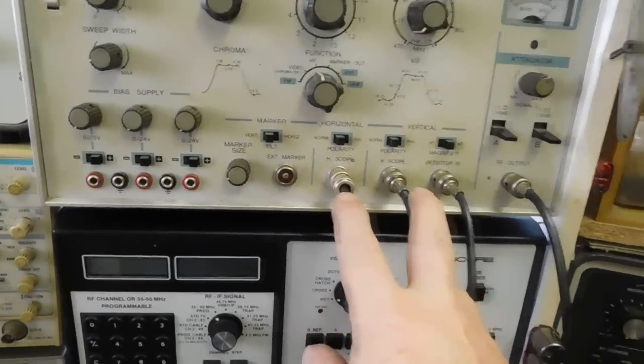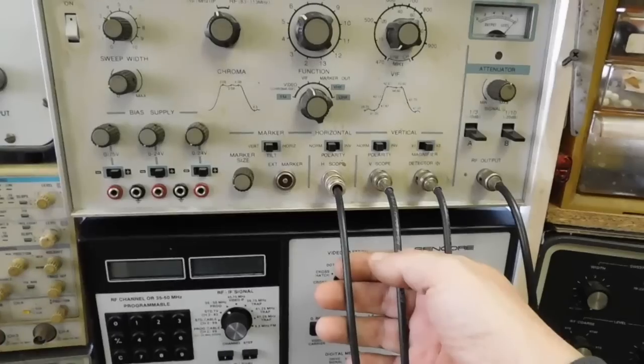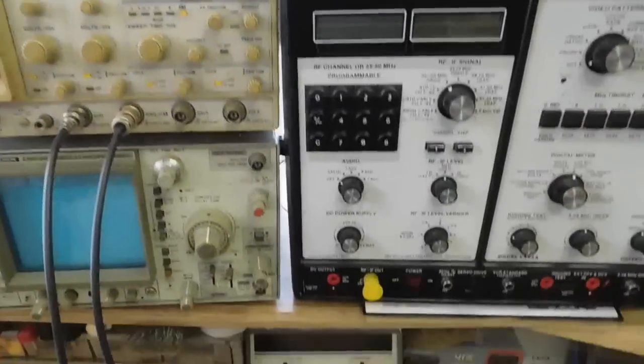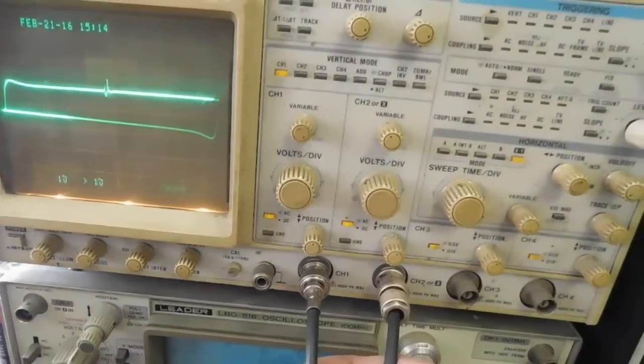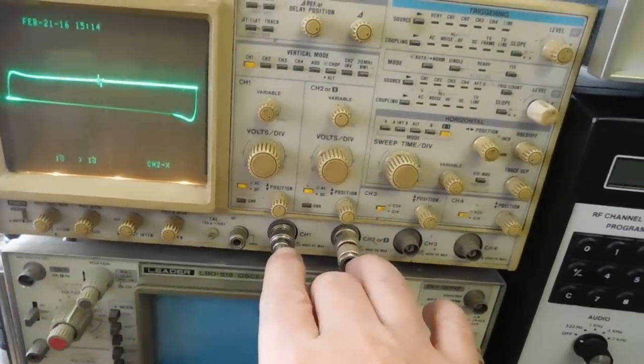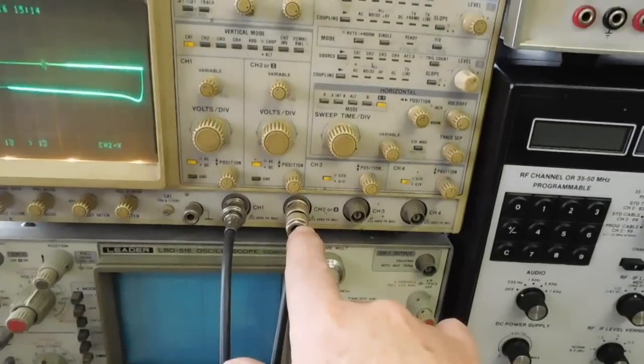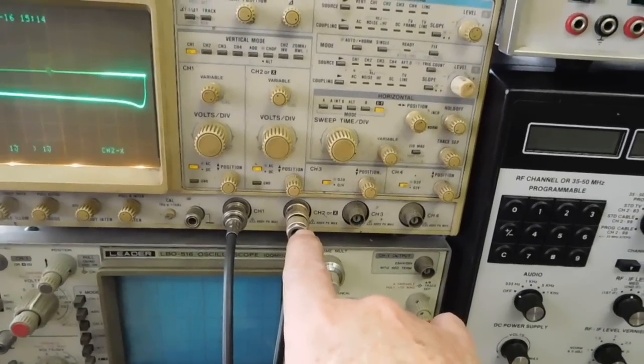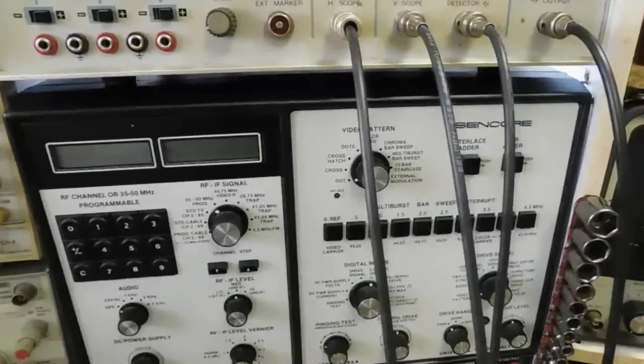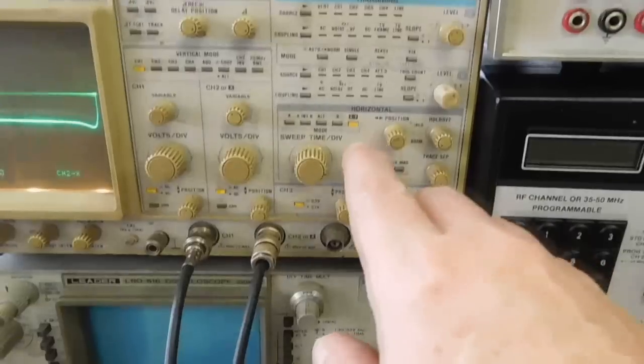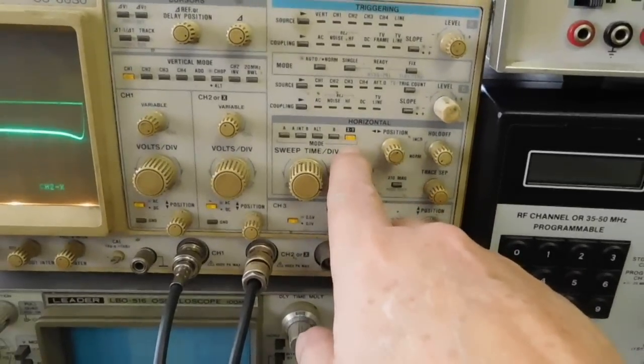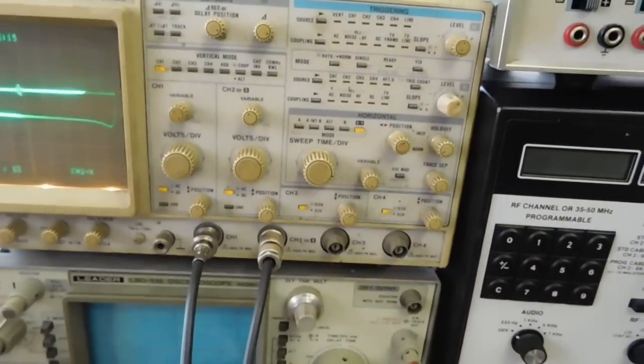One is for the Y or vertical sweep and one is for the horizontal or X. Then you set your scope up on XY mode.